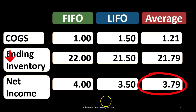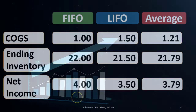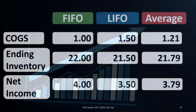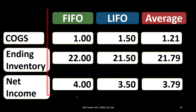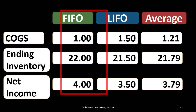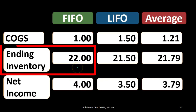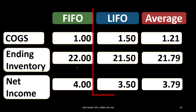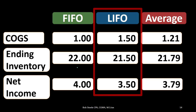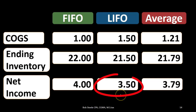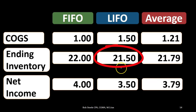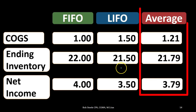In a period of rising prices — the normal time period — FIFO makes us look the best: net income is highest and ending inventory is highest. LIFO makes us look the worst: net income is lowest and ending inventory is lowest. The average is always in the middle. If prices went down, all of that would be flipped.